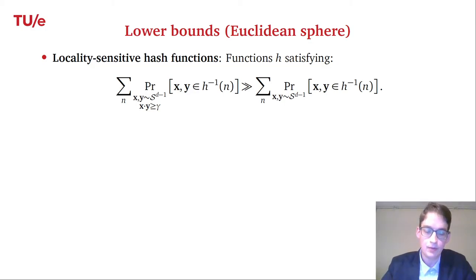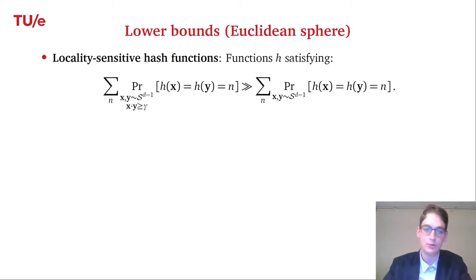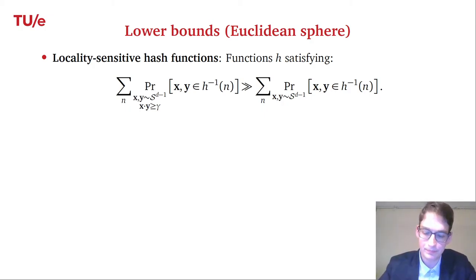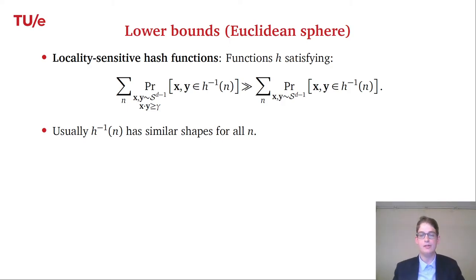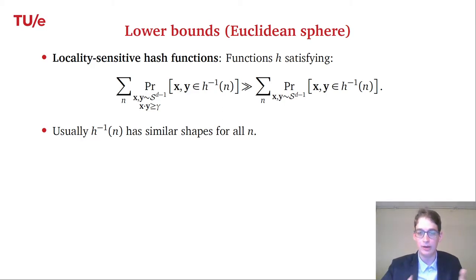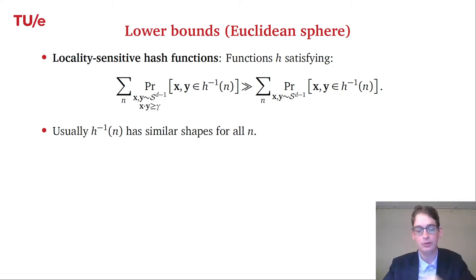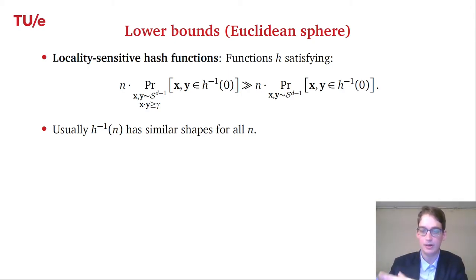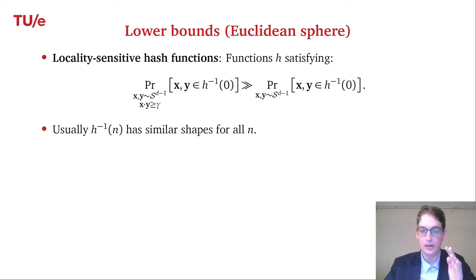The hash function induces a kind of partition of the sphere, where each part has a different hash value. Assuming hash regions have similar shapes for all hash values n — which simplifies the argument for intuition — we can eliminate the sum over n and reformulate the problem as: given a fixed-size region A on the sphere, maximize the probability that both x and y land in A given that their dot product exceeds gamma.